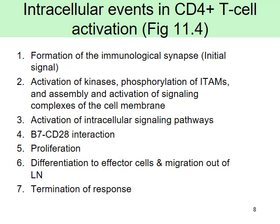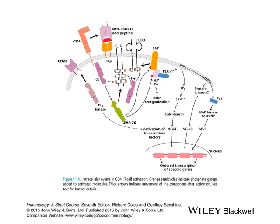Everything goes from outside in — from the surface to the nucleus. We also have to terminate this response — there is initiation, signaling pathway into the nucleus, and then termination as well. If any of these things are not properly controlled, we may have problems. This is a basic signaling pathway. Orange semicircles indicate phosphate groups — that's where phosphorylation needs to happen, that's where enzyme activation occurs.